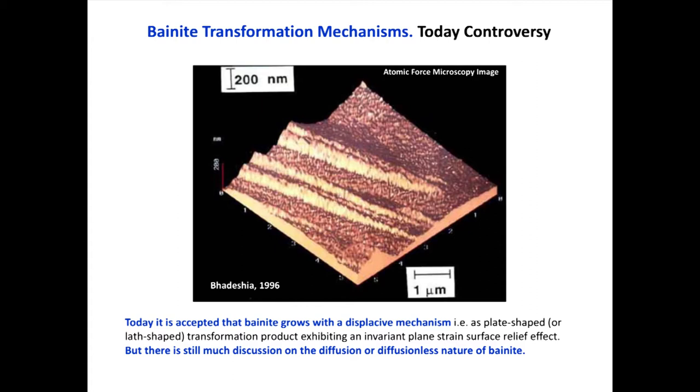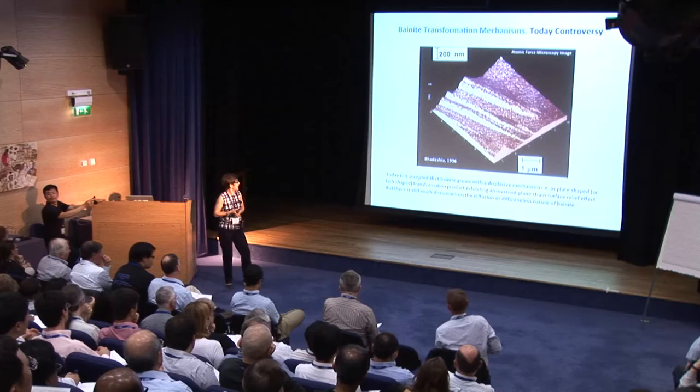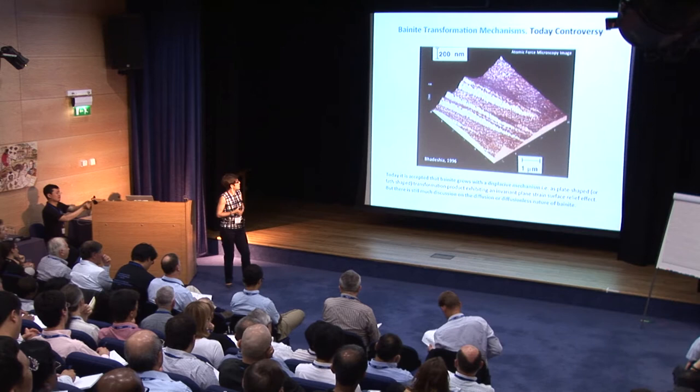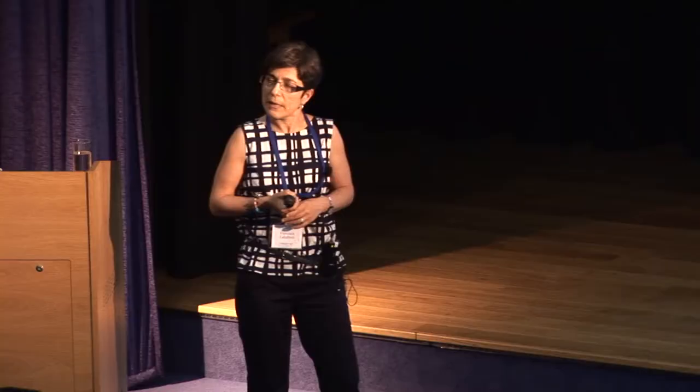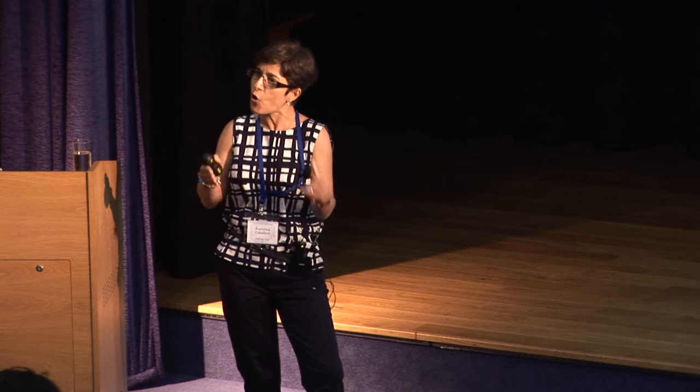This acceptance is based on experimental evidence of the invariant plane strain surface relief effect provided by Professor Bhadeshia using atomic force microscopy. However, this displacive transformation does not always imply a diffusion-less transformation. Nowadays, the discussion is focused on the role of carbon during the reaction — specifically on the role of carbon in the bainite ferrite growth process.